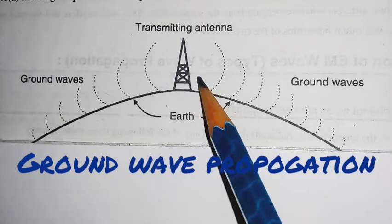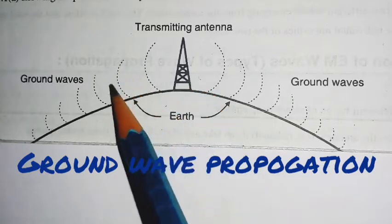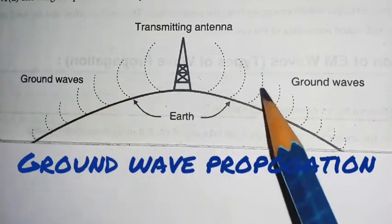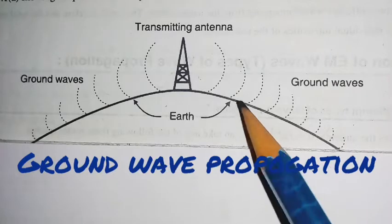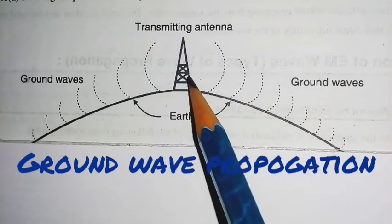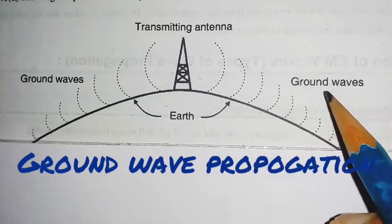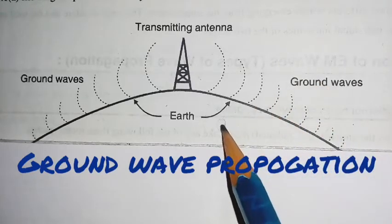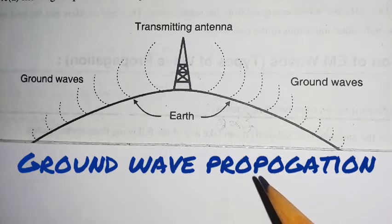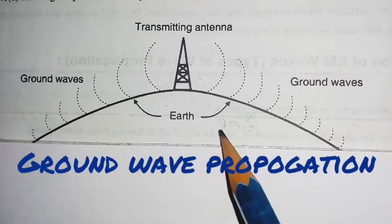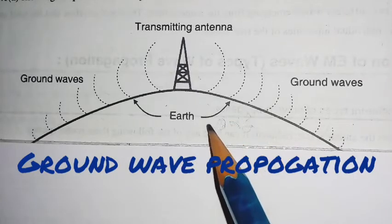Next, the transmission of ground wave propagation is vertical. The angle theta is directly proportional to the frequency, meaning the value of theta increases when the frequency of propagation increases.